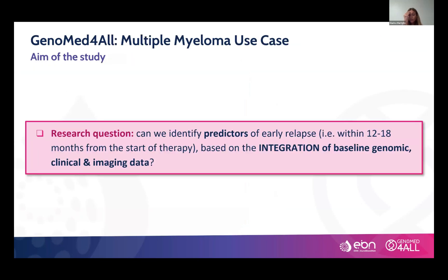In the context of the GenoMed for All project, and in particular the multiple myeloma use case, our research question — based on these premises — is: can we identify predictors of early relapse? Specifically, features that can predict early relapse within 12 or 18 months from the start of therapy, based on the integration of different types of data: genomic, clinical, and imaging data.